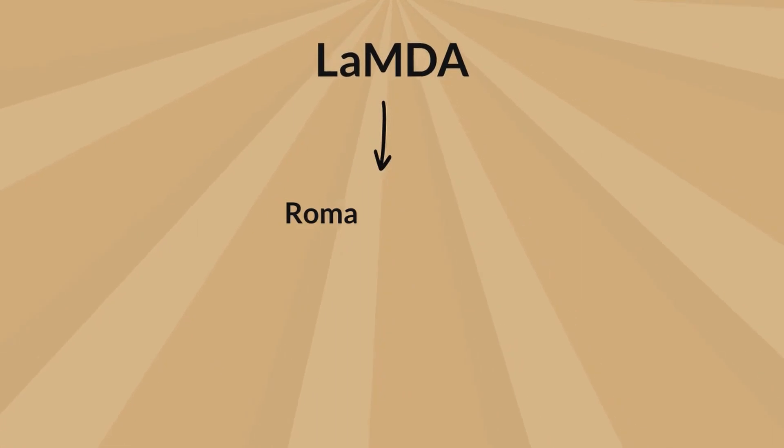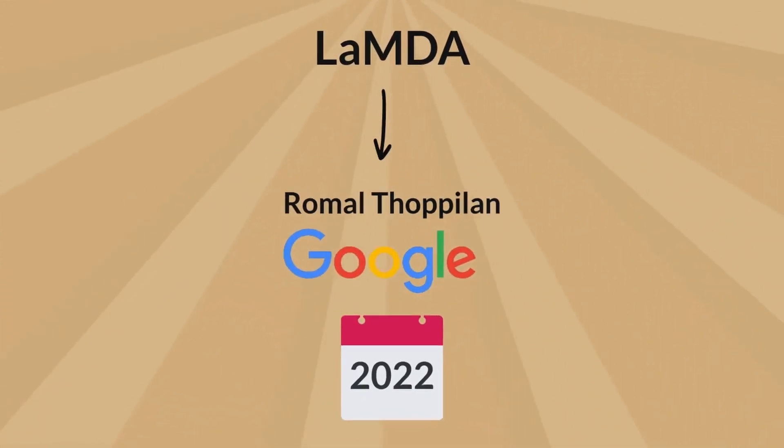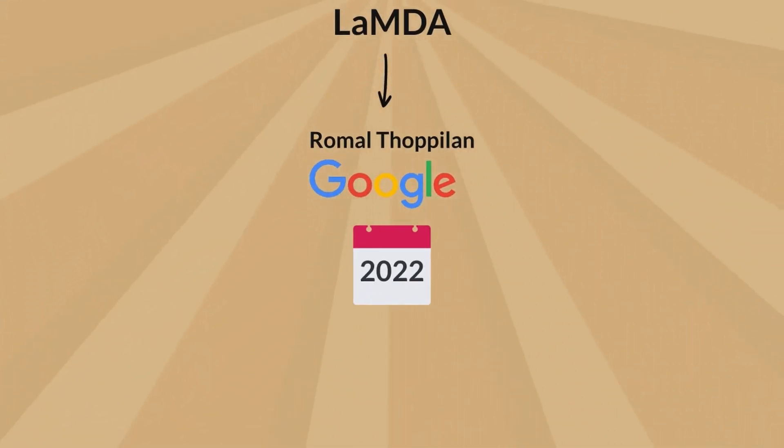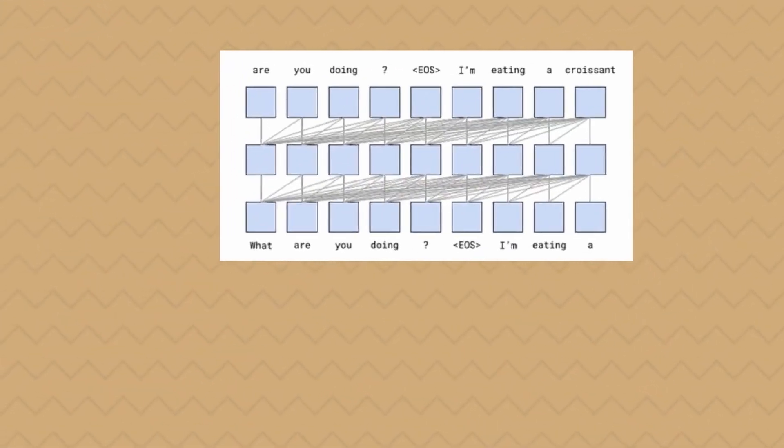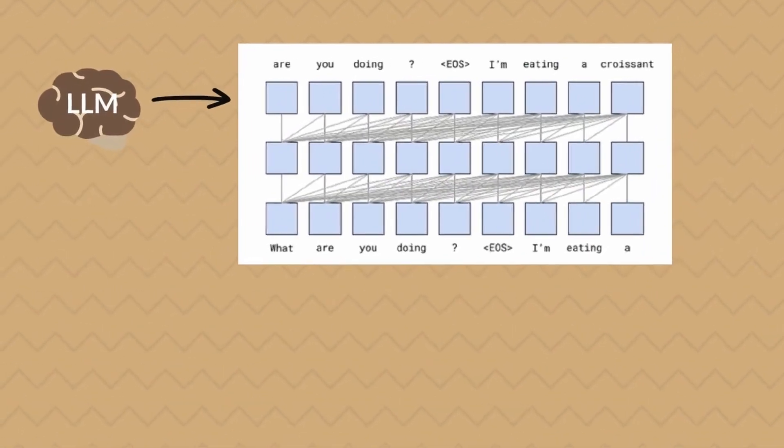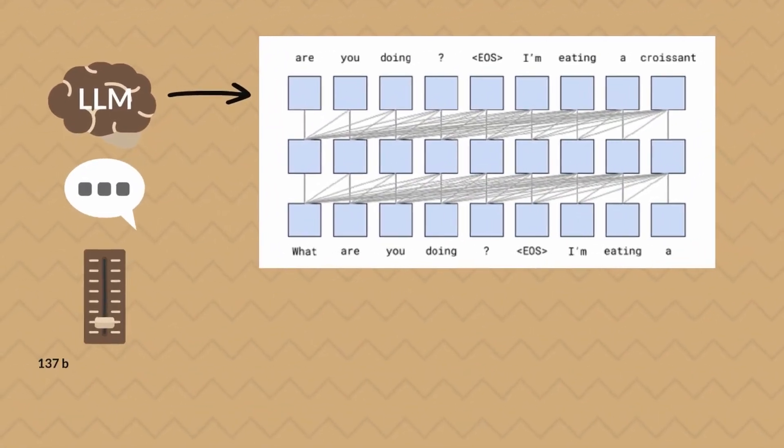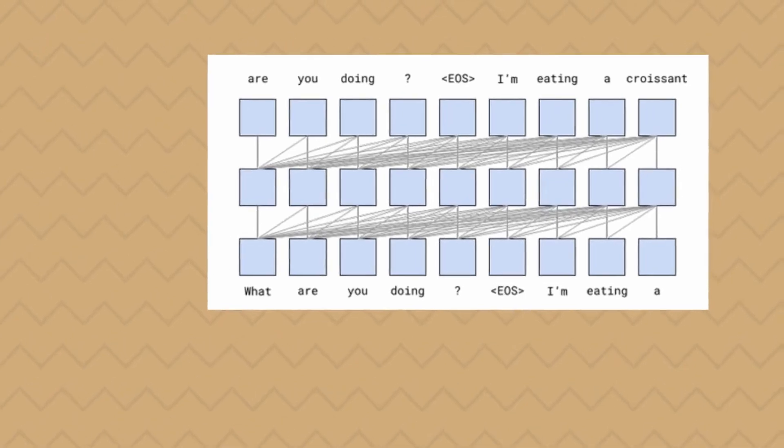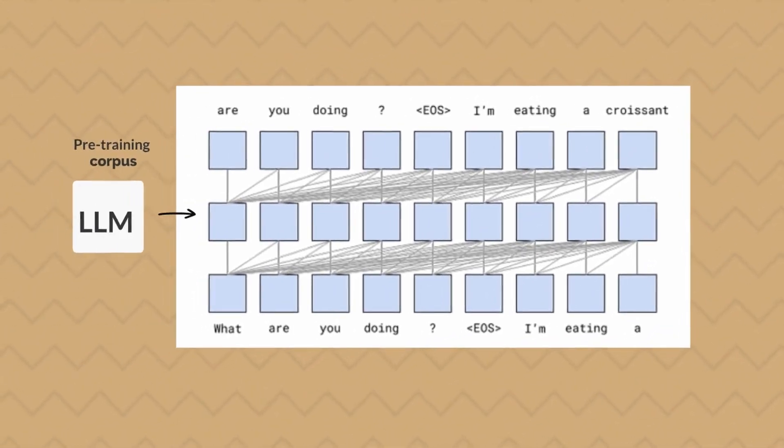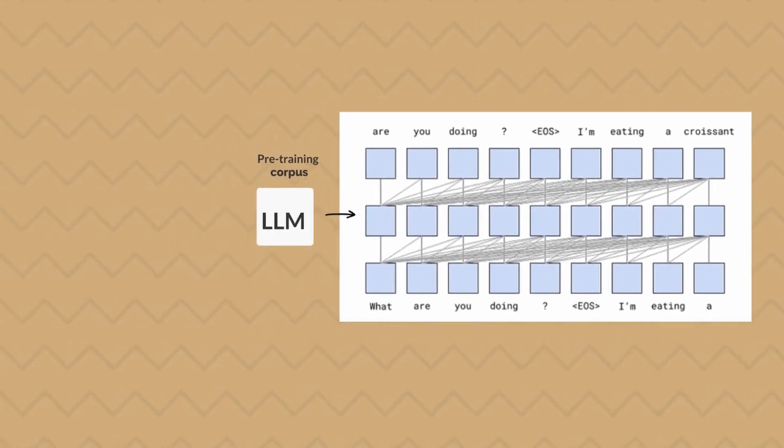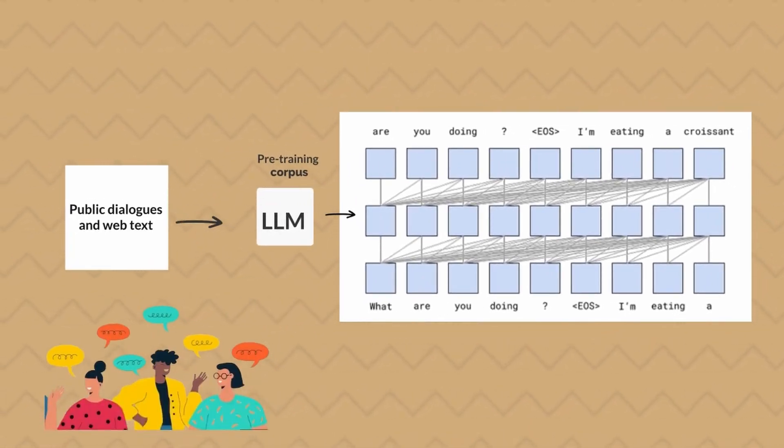Lambda, developed by Romal Thoppilan's team at Google in 2022, stands as a novel contribution to the field of large language models, specifically crafted for the intricacies of dialogue. This model diverges from general-purpose LLMs by focusing on conversations, embodying up to 137 billion parameters. As shown in this illustration, its uniqueness lies in the specialized pre-training on a massive corpus of 1.56 trillion words derived from public dialogues and web text, giving it a strong foundation in human-like conversational patterns.